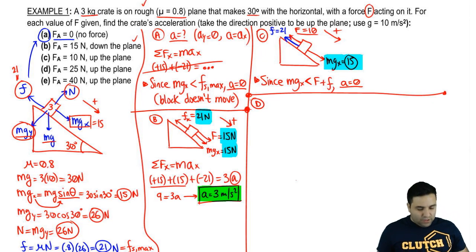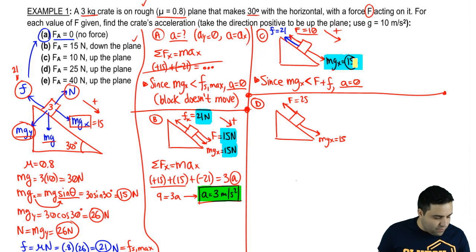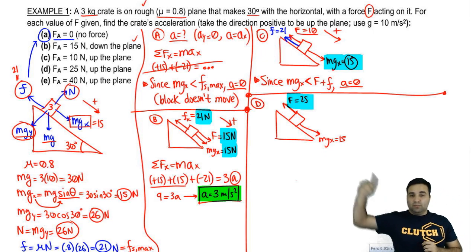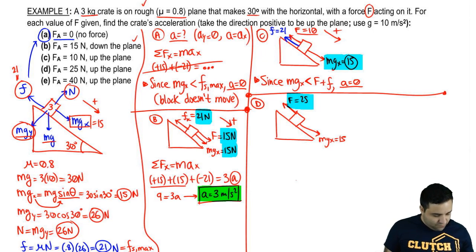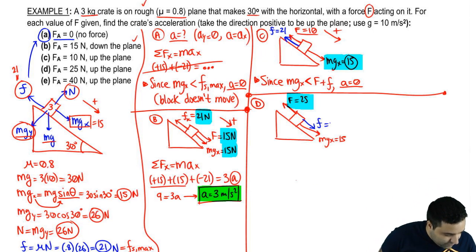Let's go to part D now. Part D says you're pushing with 25 up the plane. You push 25 up the plane. Let's draw that here. Force is 25. mgx is 15. So in the previous question, the stronger force was the 15, but now the stronger force is the 25. Without friction, it's going to move in the direction of the strongest force, which means friction will come in against that. And that's what makes this question weird, and that's why I wanted to make sure I talked about this so you would see it, which is friction will depend on the other forces. So if the net force is up, friction is opposing that. It's down. Friction is 21.